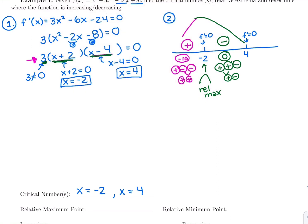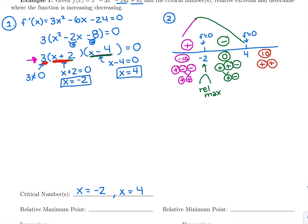The last piece of the sign chart is picking any number after 4 to test — I'll use positive 10. Always plug into the derivative on a sign chart, never the original function, because you want the sign of the derivative. The factor 3 is positive. 10 plus 2 is positive. 10 minus 4 is positive. Three positives multiply to a positive derivative, which means the original function is increasing.